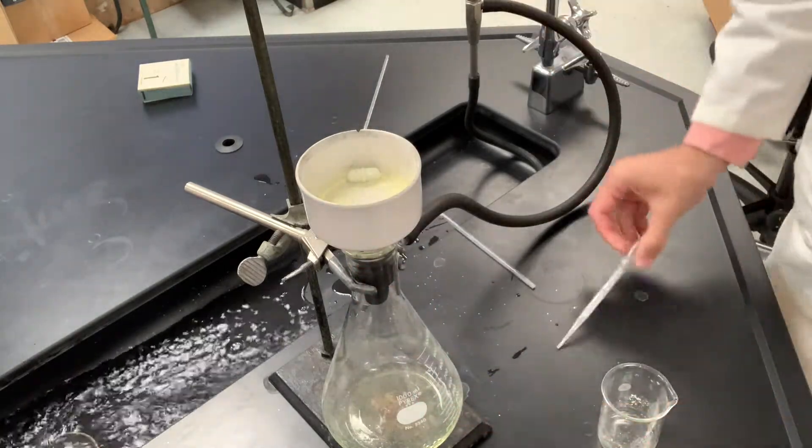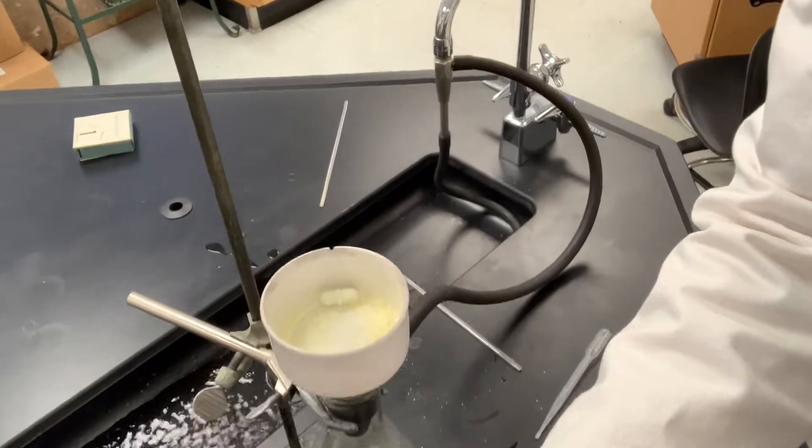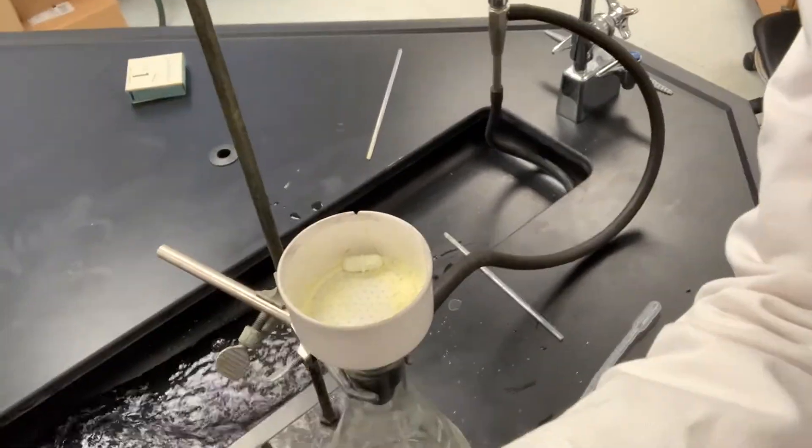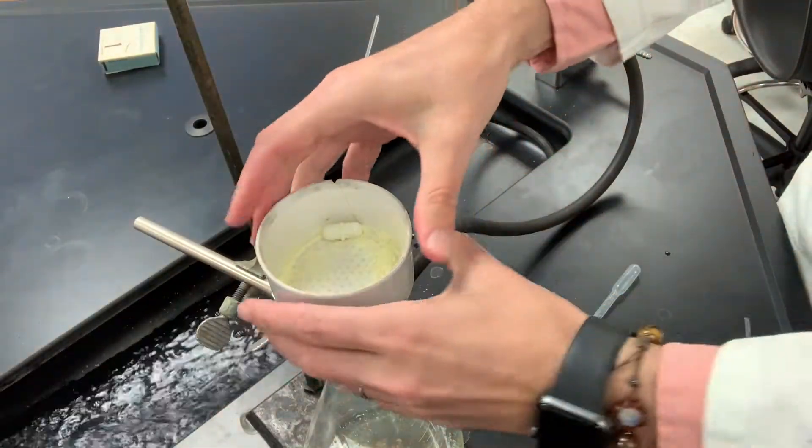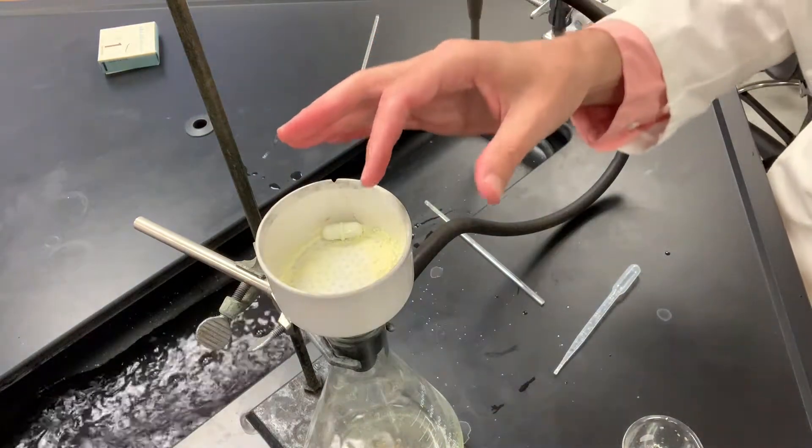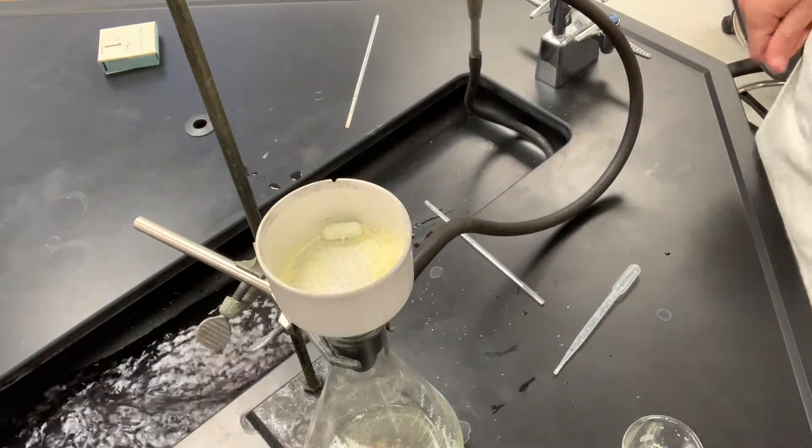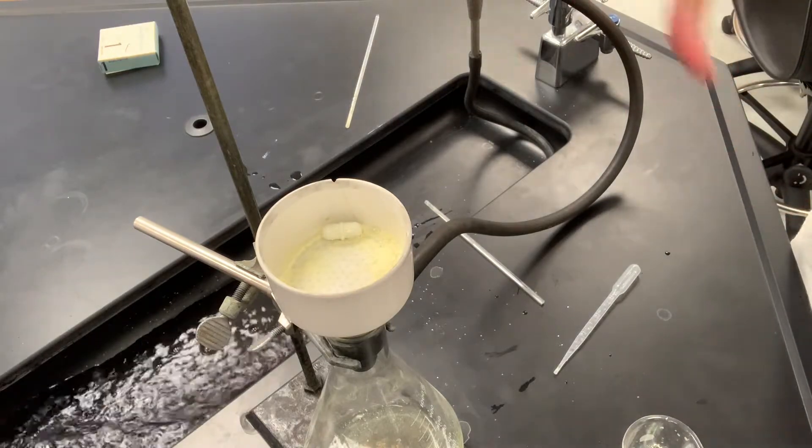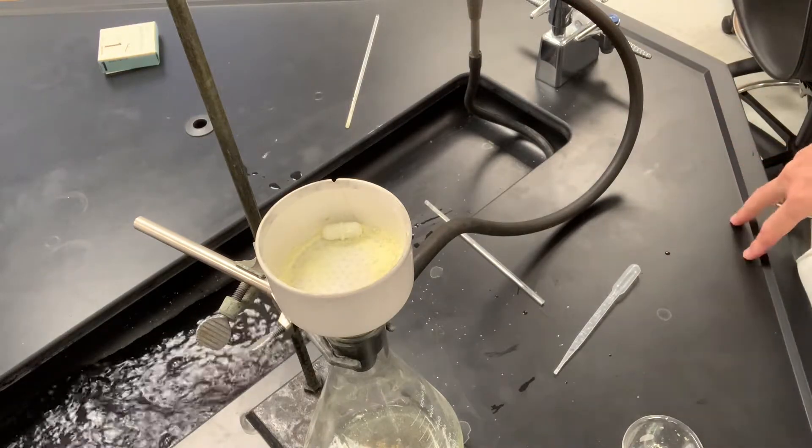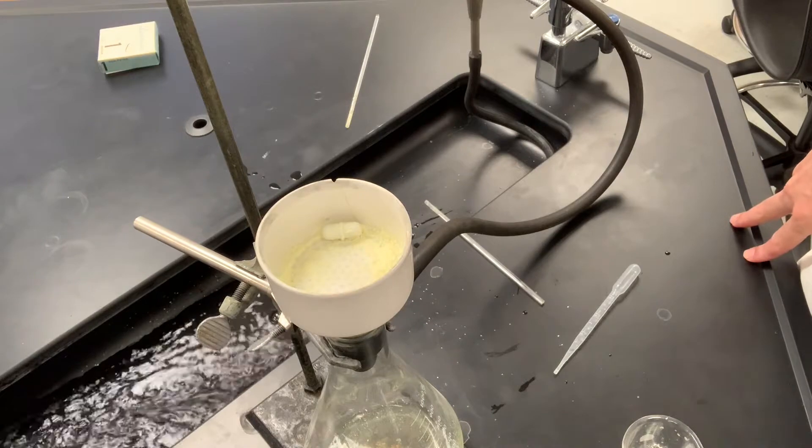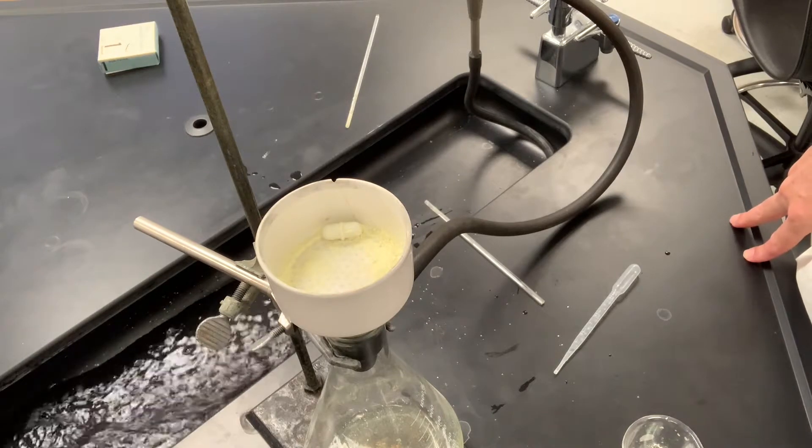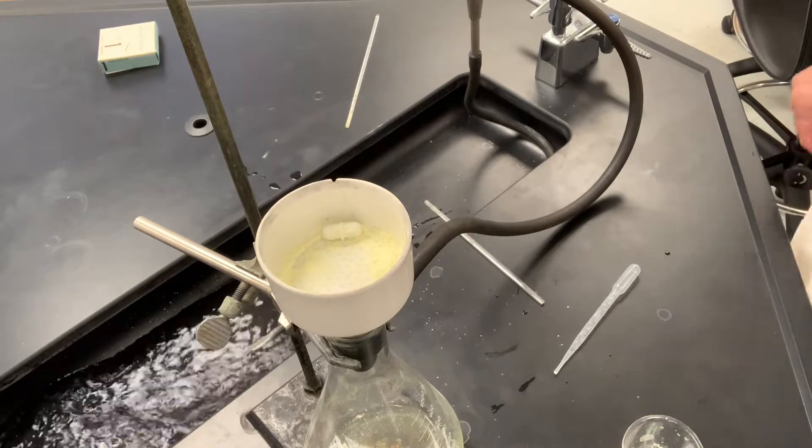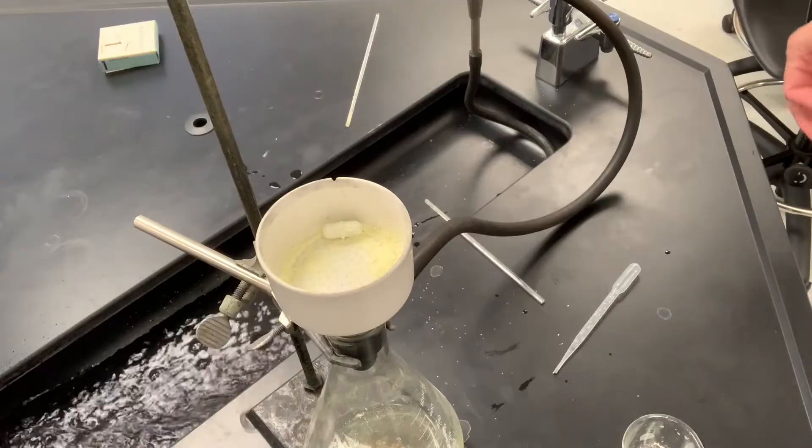So that might be around 10 or 15 milliliters. Let me try to position the camera here so you can take a look at the solid. It's got a kind of yellowish tint to it, so we'll let this air dry here maybe about five minutes, and then we'll set it out to just air dry until the next laboratory period. Then we'll go ahead and weigh it when it's dry to calculate the yield.